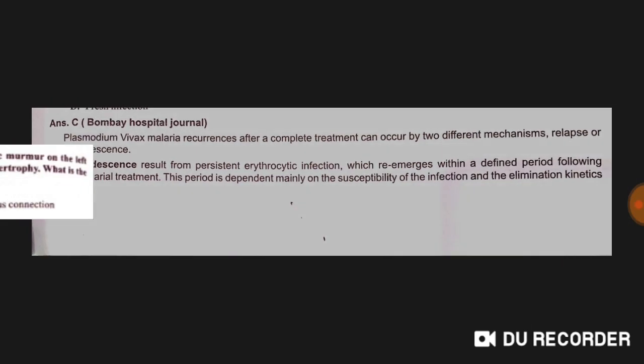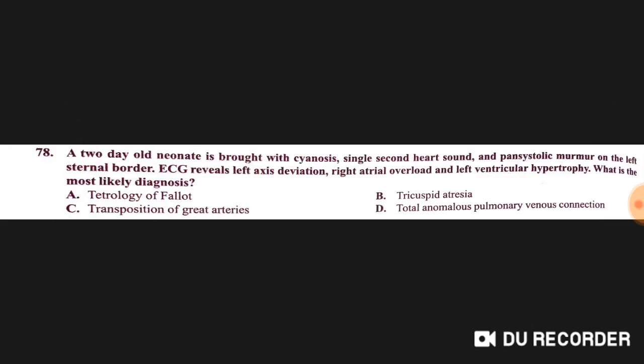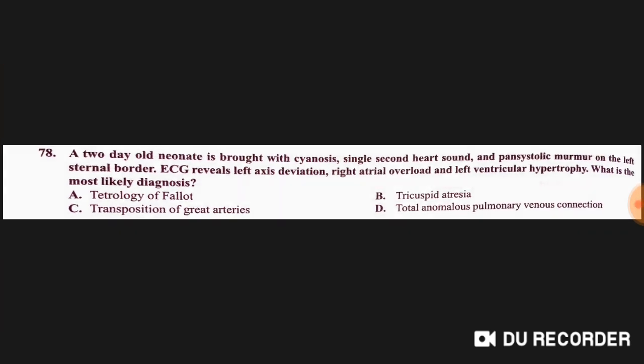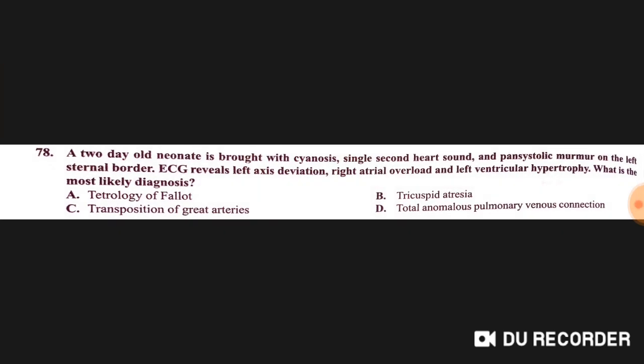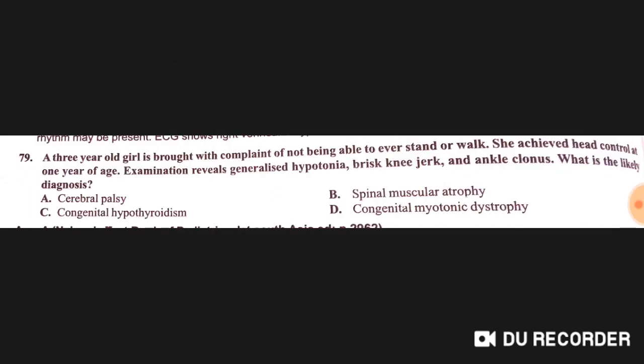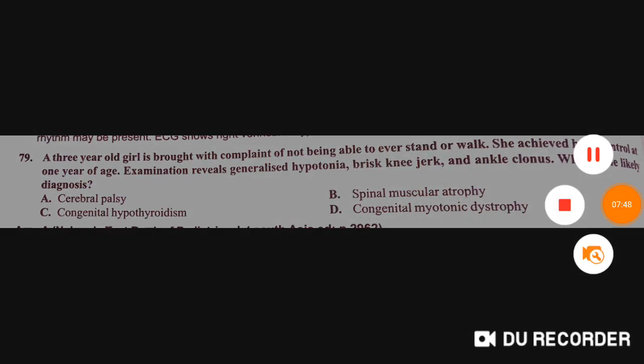A two-day-old neonate presents with a single second heart sound and a pansystolic murmur on the left sternal border. ECG shows left axis deviation, right atrial overload, and left ventricular hypertrophy. The most likely diagnosis is tricuspid atresia.